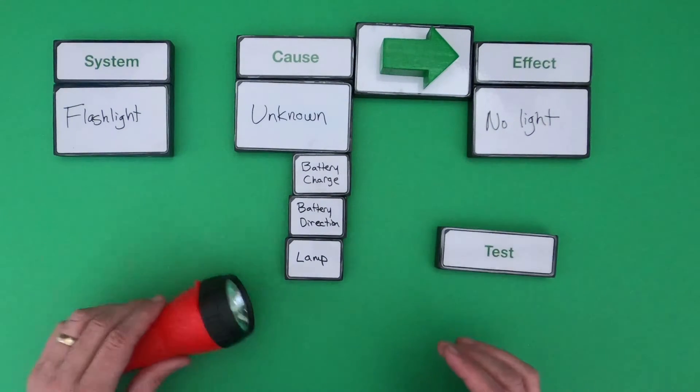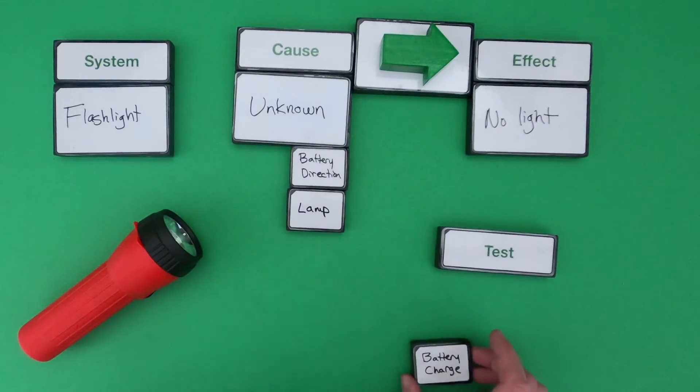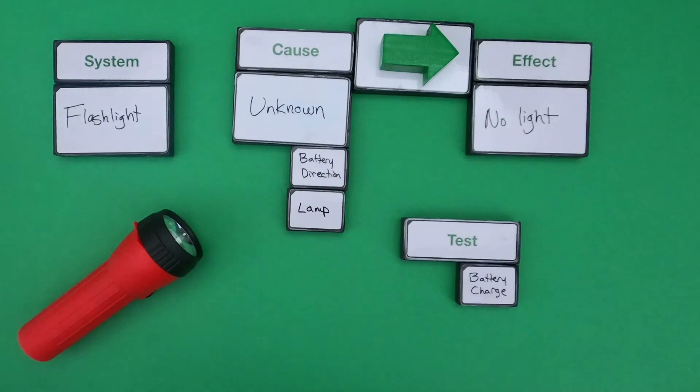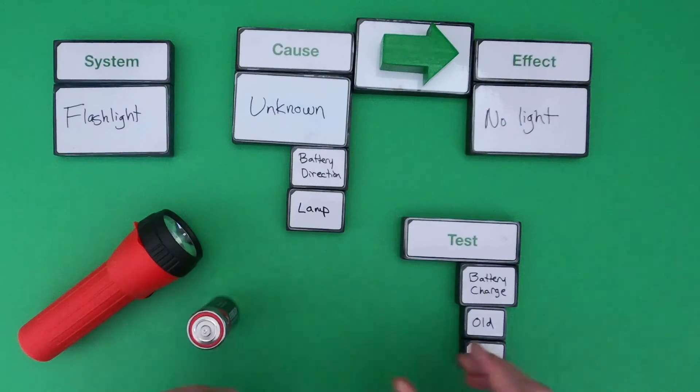So if I want to test out if it's battery charge and how that is affecting the light, I could just try the old battery, and then I could try a brand new battery, and we could figure out does that affect it or not.